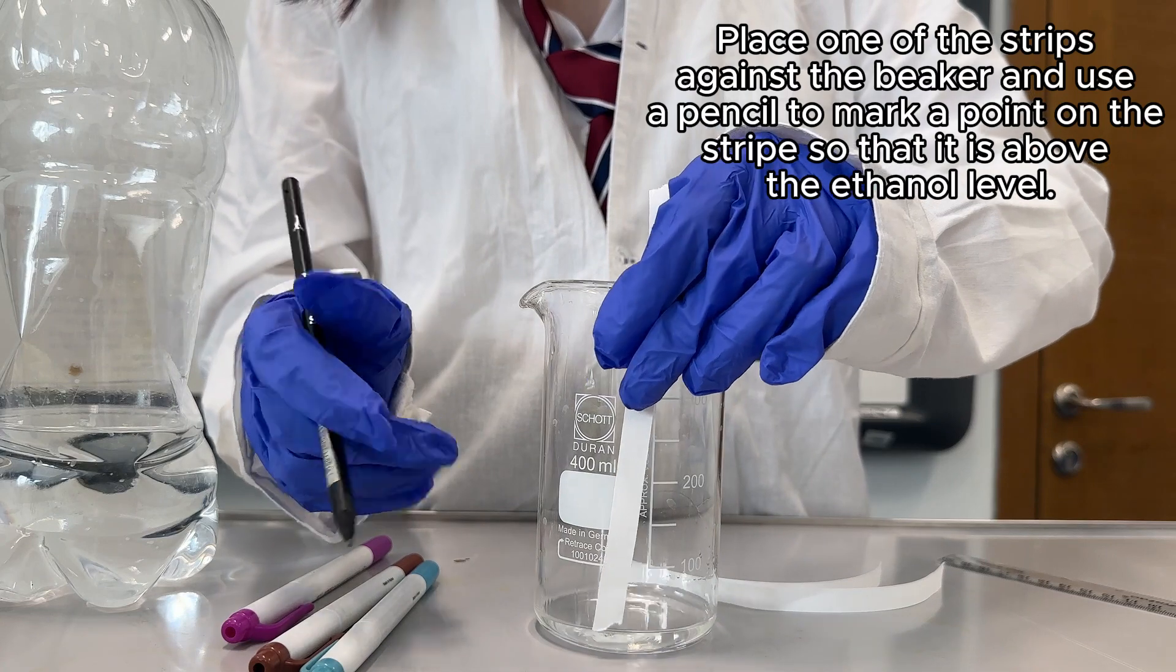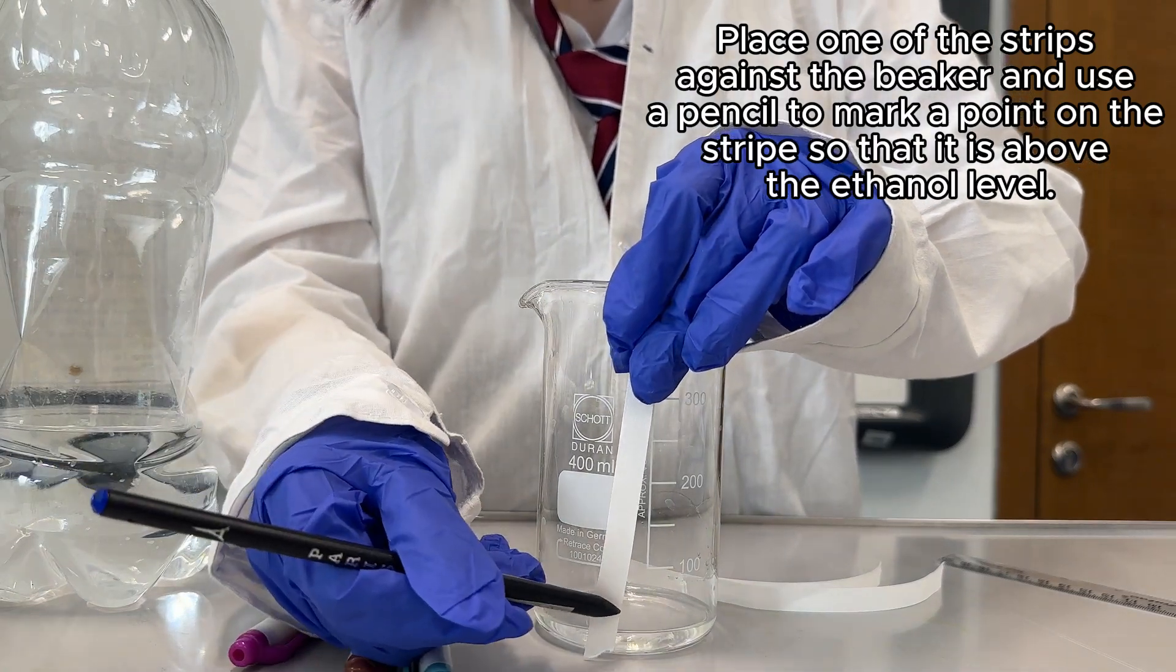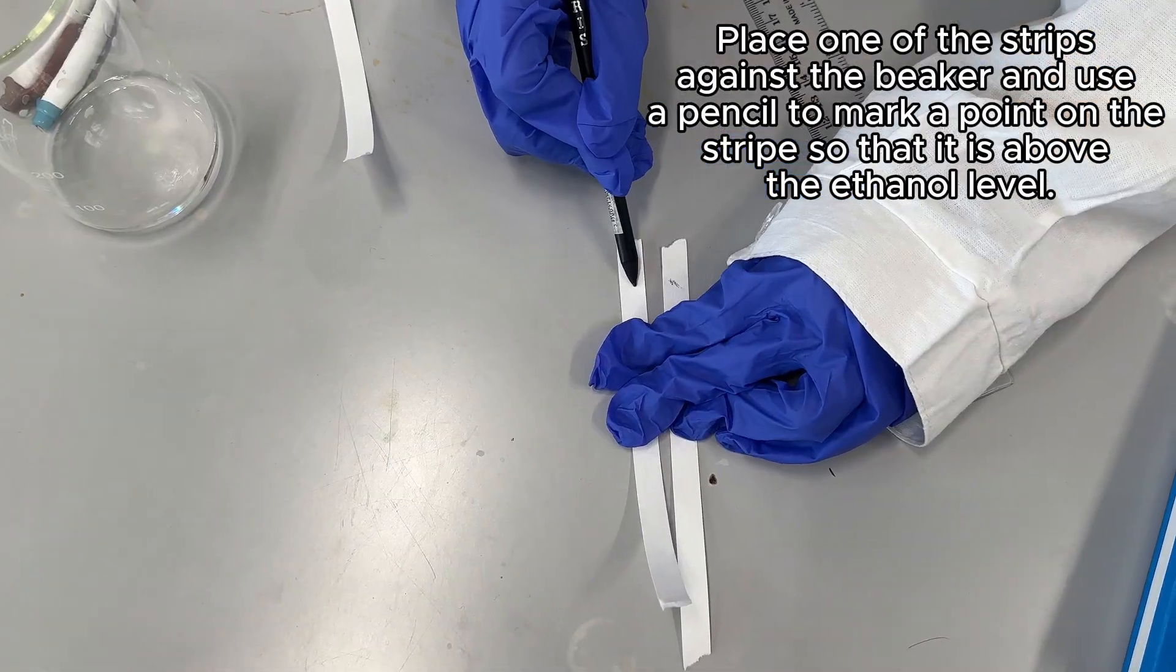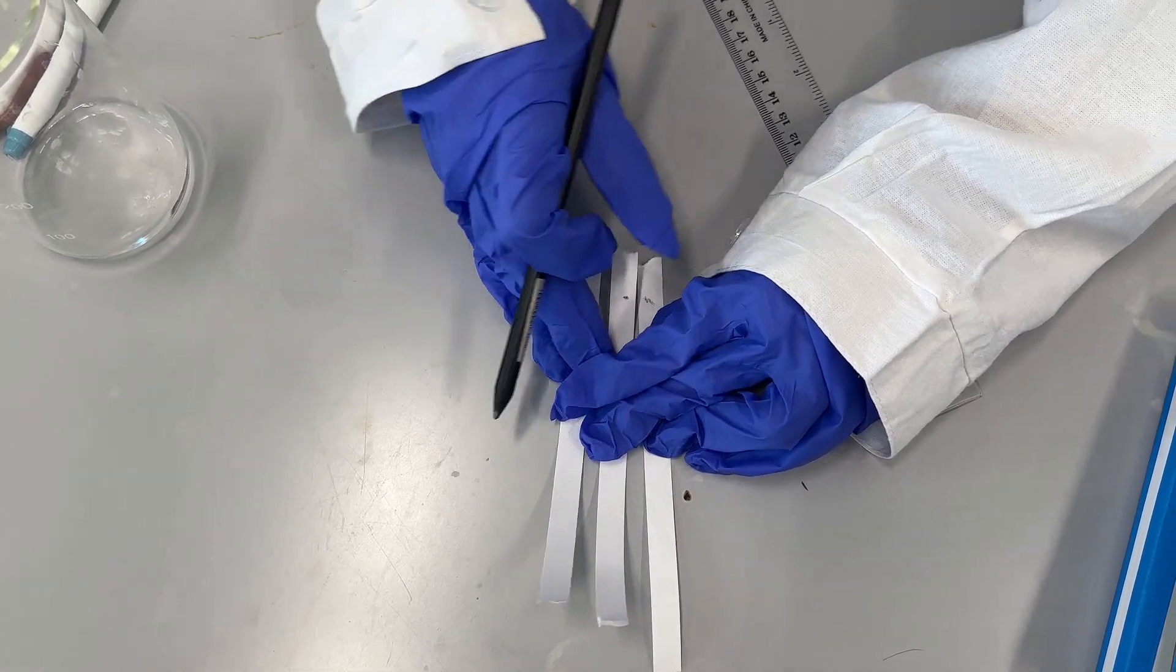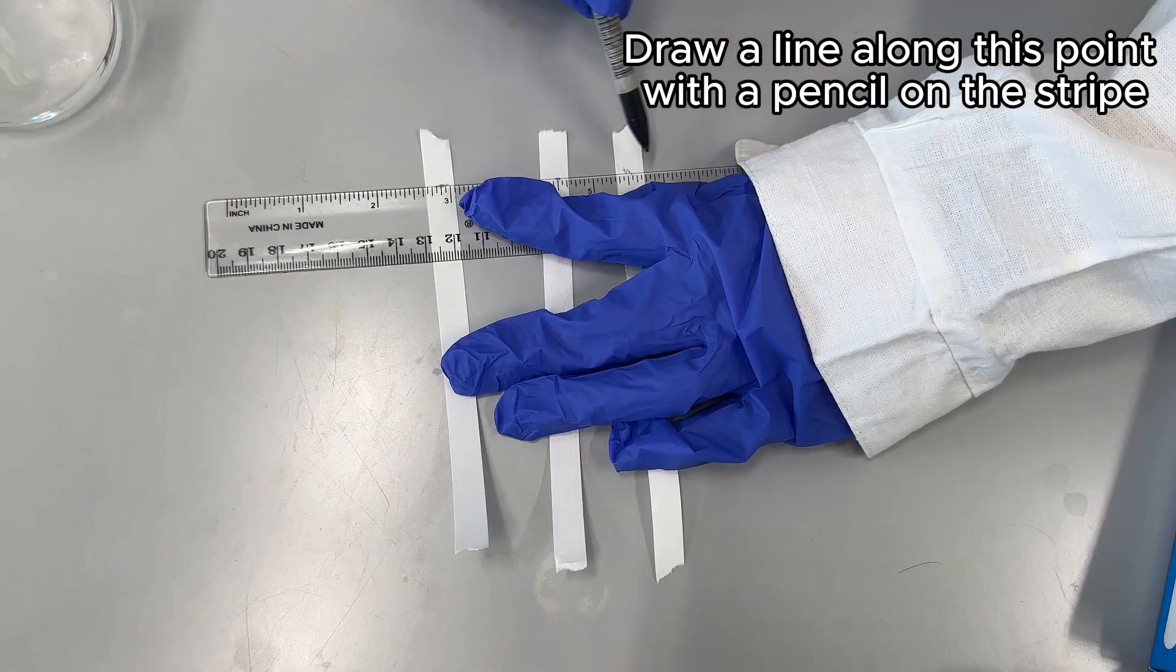Place one of the strips against the beaker and use a pencil to mark a point on the strip so that it is above the ethanol level. Draw a line along this point with a pencil on the strip.